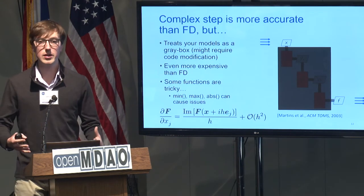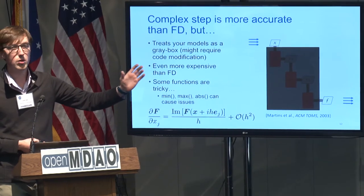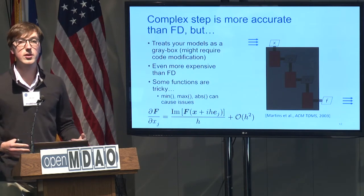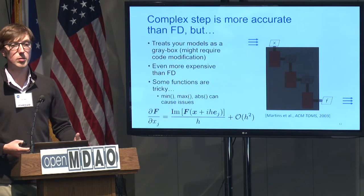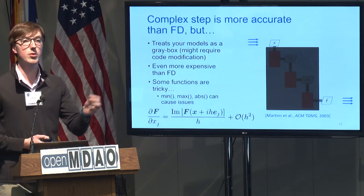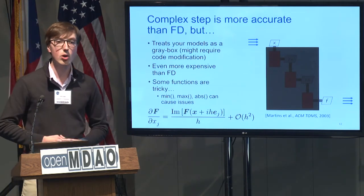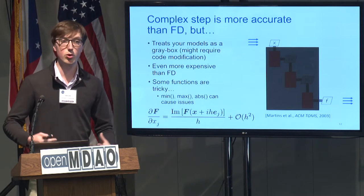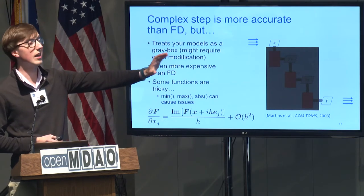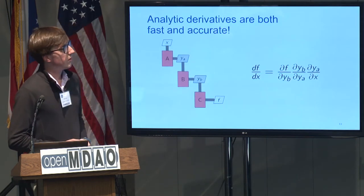With complex step, you can use a very small step size — perturbed in the complex plane — and get very accurate derivative information. The error is on the order of h-squared; using h = 1e-40 gives a fantastic way to check your derivatives. This is what the MDO lab uses to verify analytic derivatives.